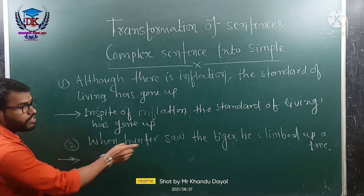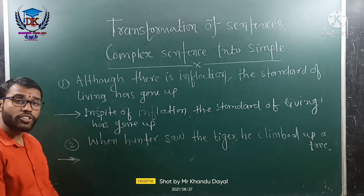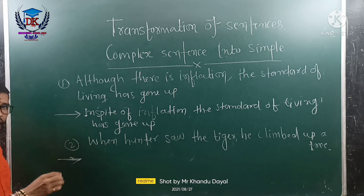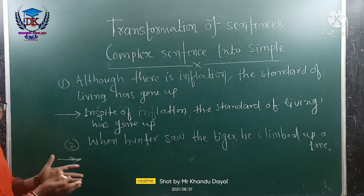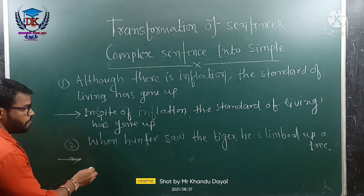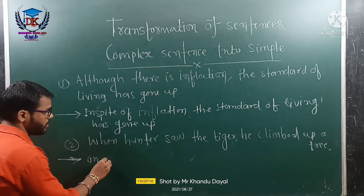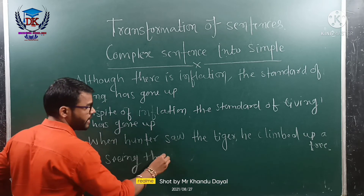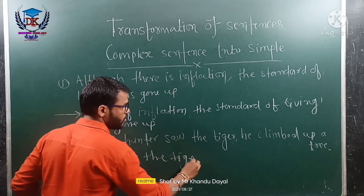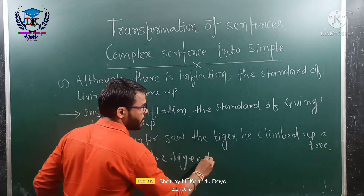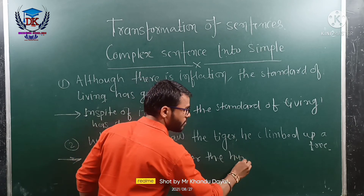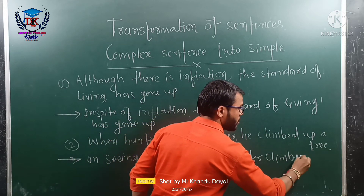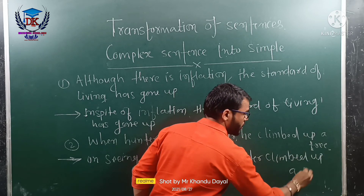Next example: 'When the hunter saw the tiger, he climbed up a tree.' How do we transform that into a simple sentence? Using the -ing participle: 'On seeing the tiger, the hunter climbed up a tree.'